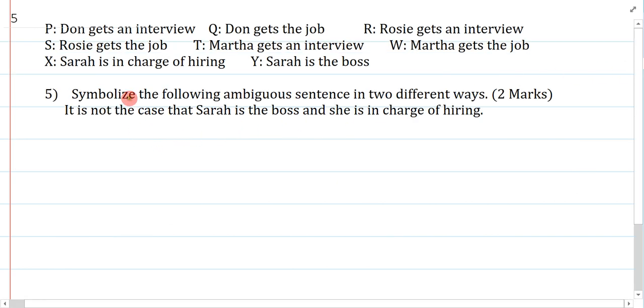Example five. Symbolize the following ambiguous sentence in two different ways. It is not the case that Sarah is the boss and she is in charge of hiring. So, not the case, so that's a negation, Sarah is the boss, Y, and she is in charge of hiring is X.